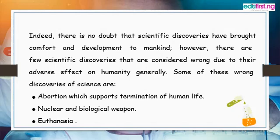Some of these wrong discoveries include abortion, which is the termination of pregnancy — one wrong application of science. We also have nuclear and biological weapons that are usually deployed in wars. Then there is euthanasia, which is the killing of someone painlessly, or allowing someone to die.